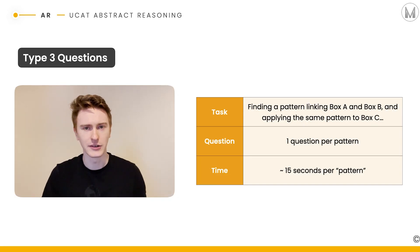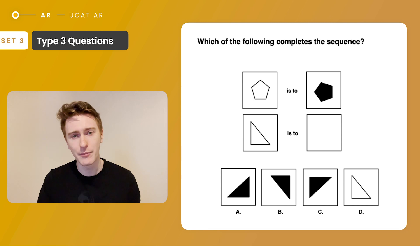Now let's look at type three questions. These are questions where you're given a relationship between two different shapes and you're asked to apply that relationship to a separate example. It's much easier when we work through the example next. Like before, this is one question per pattern and that means that you get 15 seconds to answer the question and then the next question is completely different. It's not in any way related to the previous one. Here's an example of a type three question. Pause the video now and have a go.